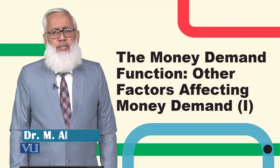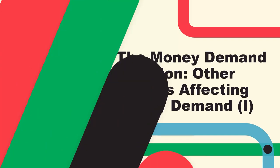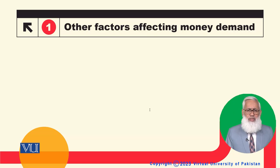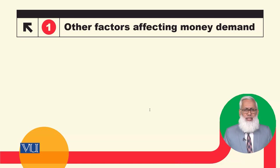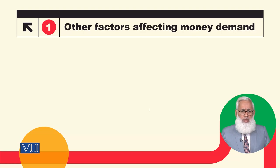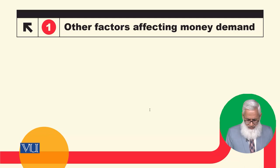The money demand function — other factors affecting the money demand. Dear students, last module में हमने money demand function discuss किया और उसके important determinants — Price level, real income, nominal interest rate, real interest rate और expected inflation rate — हमने इनका money demand के साथ relationship discuss किया था। आज हम कुछ और factors को discuss करेंगे जो money demand को influence करते हैं।